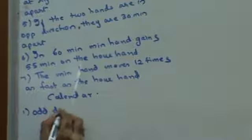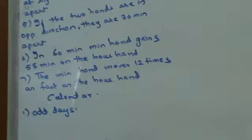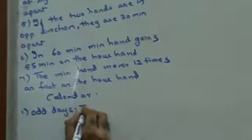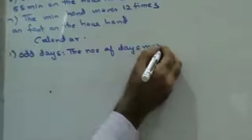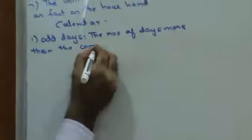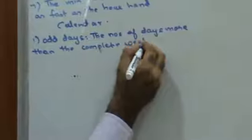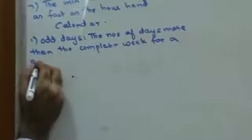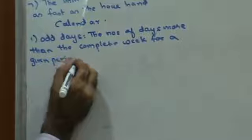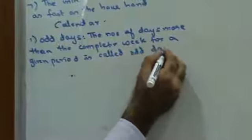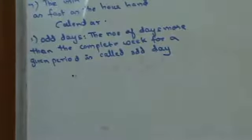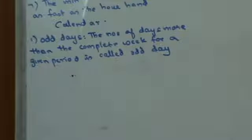Odd days: what are odd days? The number of days more than a complete week is called odd days. For example, if there are nine days, seven days make a week, so the extra two days will be called odd days.